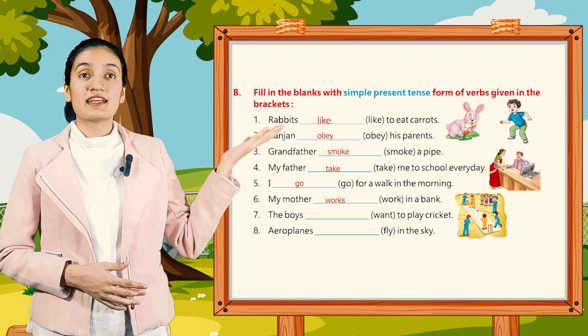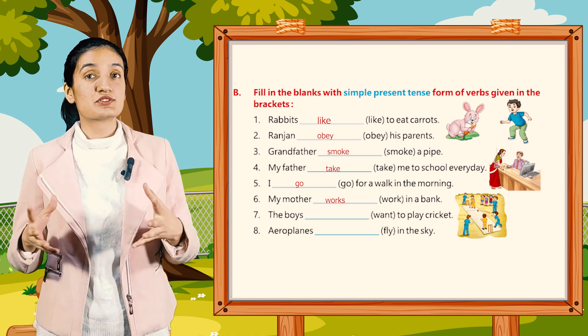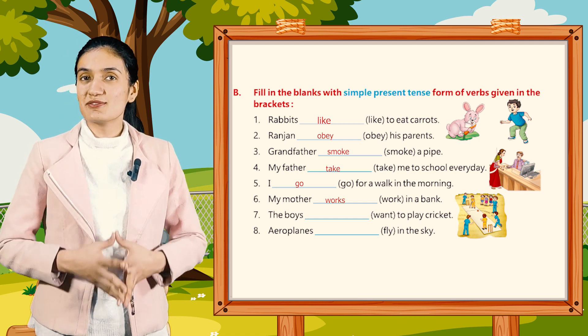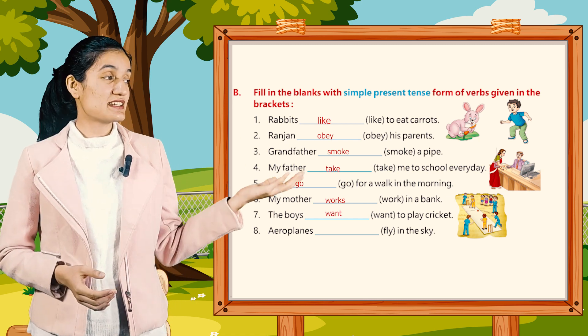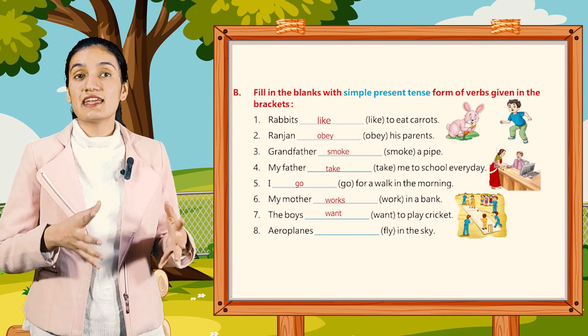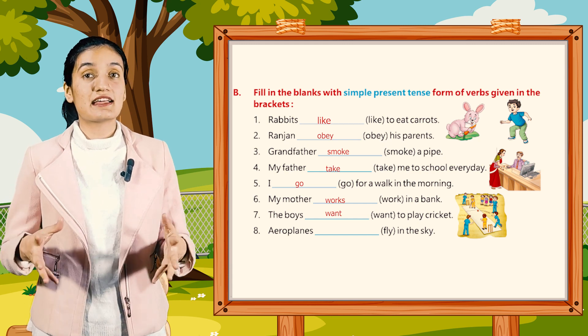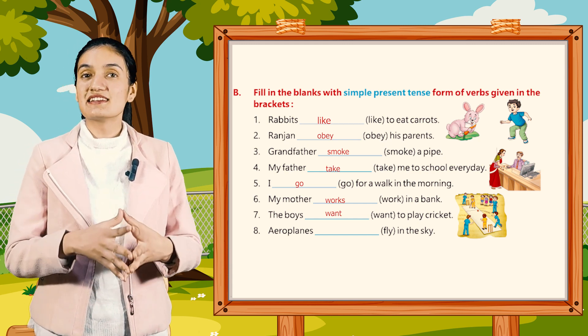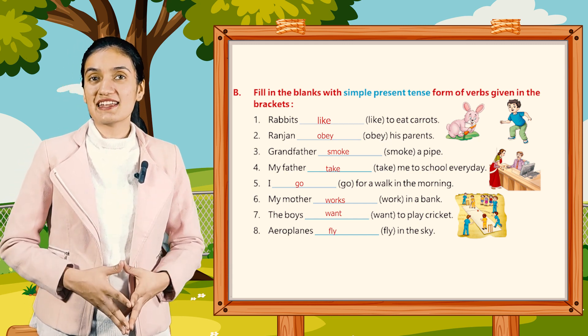Seven, the boys dash to play cricket — it will be: want. Eight, aeroplanes dash in the sky — it will be: fly.